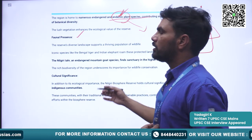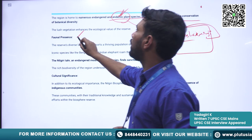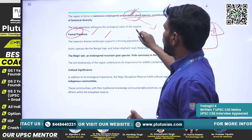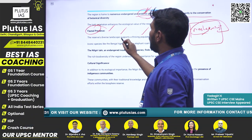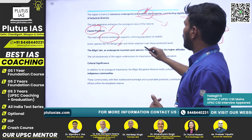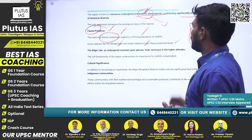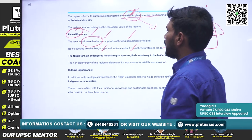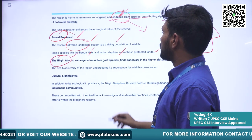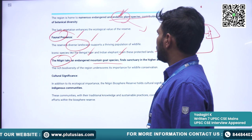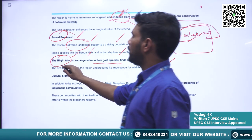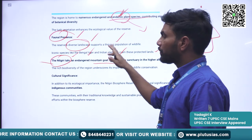The Biosphere Reserve is also famous for its faunal presence. It supports a thriving population of wildlife across a diverse landscape — species like Bengal tiger and Indian elephant. The Nilgiri tahr, one of the endangered species, is a mountain goat species that finds sanctuary in the higher altitudes and is also endemic to this particular region.